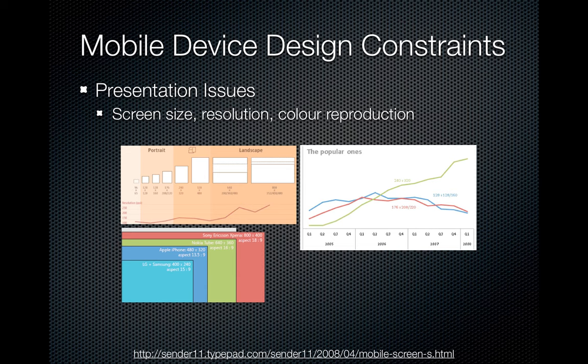Let's look at some mobile device design constraints. One of the most obvious is presentation issues — screen size, resolution, and color reproduction. These infographics show the variability between these factors, though they only go up to 2008 and are out of date now. You can find current reports on screen sizes and pixel densities online. The point is to demonstrate how much more variable this is compared to the desktop context.